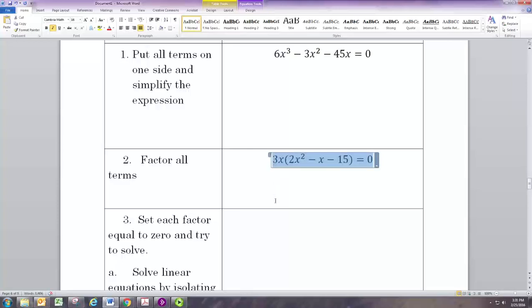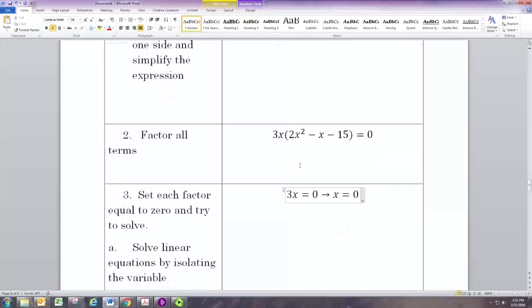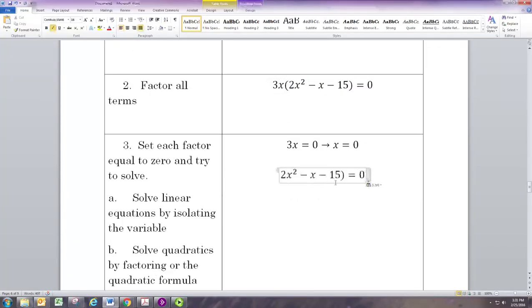The next step is since these factors are equal to zero, we can set each one equal to zero independently to get two equations. Now the first one's pretty easy, right? 3x equal to zero obviously just means that x is zero - just divide by three.